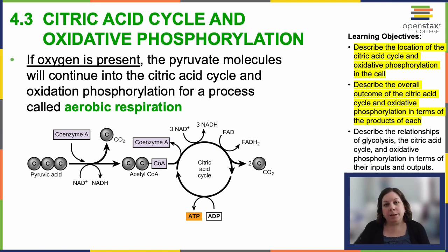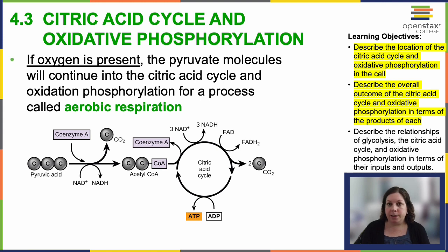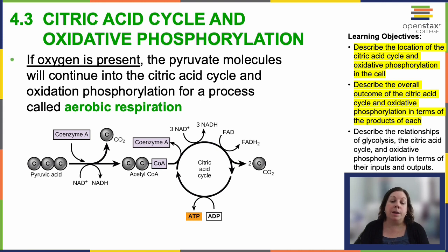The citric acid cycle happens in the mitochondria, and you can think of it as this circular pathway that produces carbon dioxide, ATP — so energy — and then coenzyme molecules, NADH and FADH2. Some cycle components can also help make non-essential amino acids.